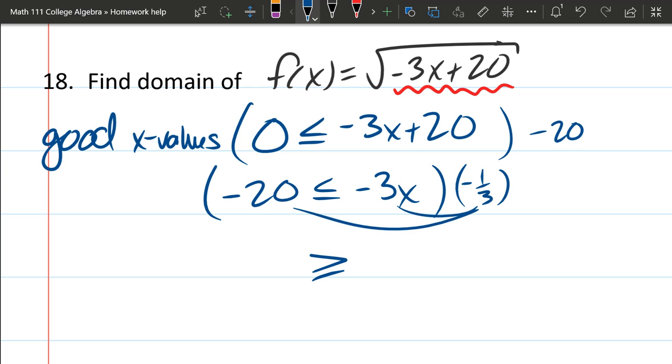And now we're gonna multiply both sides here. So we have on the left 20 over three. The two negatives cancel. On the right, negative three divided by negative three cancels. So we just have x.